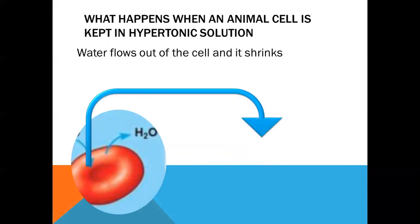And what is going to happen when an animal cell is kept in a hypertonic solution? Hypertonic solution means less water outside and more water inside, so water will move from inside of the cell to outside. So the cell will shrink.